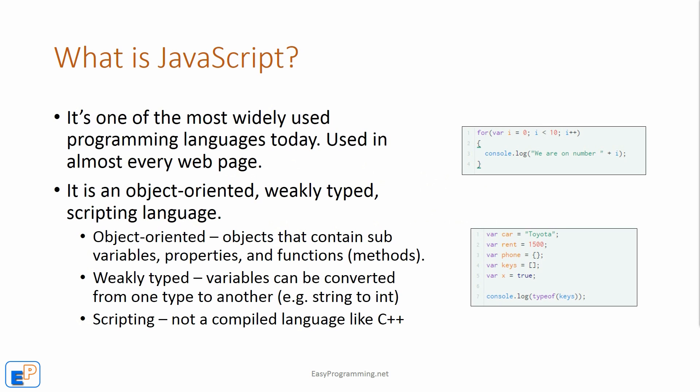It's weakly typed, meaning variables can be converted from one type to another. For example, you can turn a string which is a number into an integer, where in strongly typed programming languages you cannot do that. And scripting means it's not a compiled language like C++ or even Java, which needs to be compiled before you can deploy it. On the right here, I have just some screenshots of what some of the structure and syntax looks like.